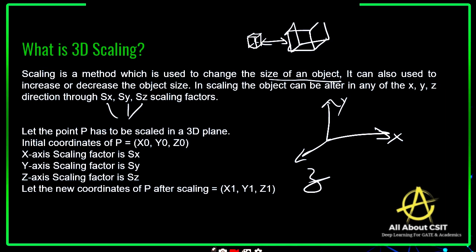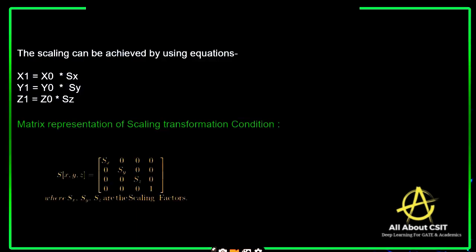Let us consider a point that has to be scaled in a 3D plane. Scaling changes the size of an object, whereas translation changes the position. In scaling, the size is increased or decreased. If the initial coordinates of an object are X0, Y0, Z0, and the scaling factors on X, Y, Z axes are SX, SY, SZ respectively, then the new coordinates X1, Y1, Z1 are found by: X1 = X0 × SX, Y1 = Y0 × SY, Z1 = Z0 × SZ.